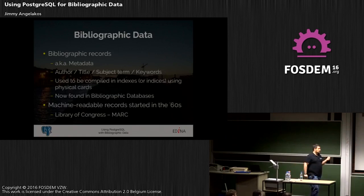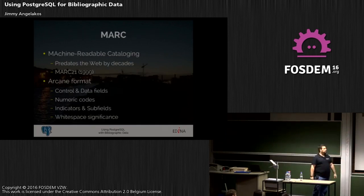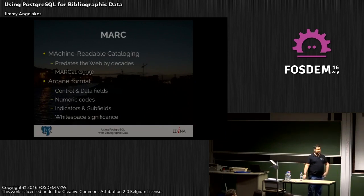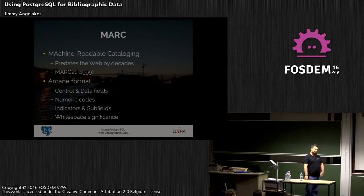In the 60s, we started having machine-readable records. The Library of Congress specified a format called MARC — machine-readable cataloging, very imaginatively titled. As it started being implemented in the 60s, you can imagine it's not a technology made for the web. There was an attempt by the Library of Congress and some other groups to update the standard in 1999, and they called it MARC for the 21st century, so it's now MARC 21. On the next page we'll see what their vision of the 21st century was.